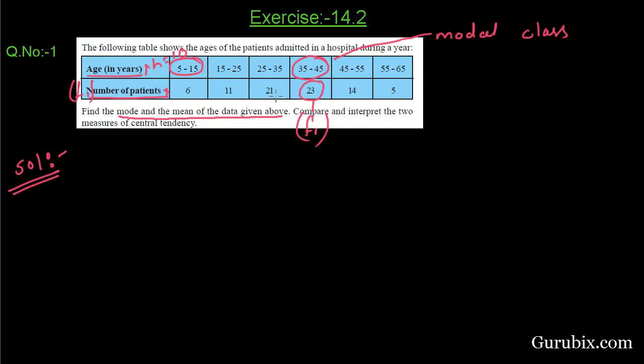Now, we have to find F0. F0 is the frequency of that interval which comes before the modal class interval. We can see in this table, the 25 to 35 class interval comes before the modal class interval. So, our F0 is 21.